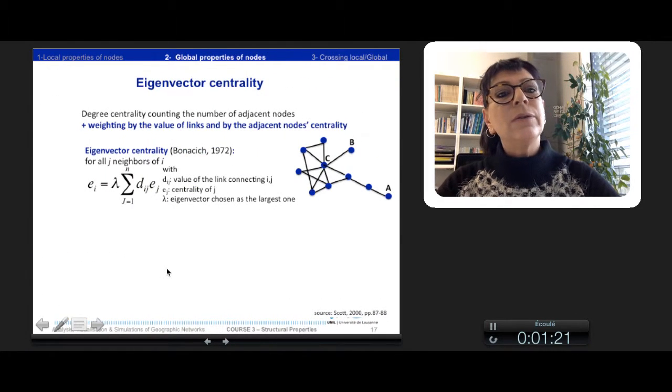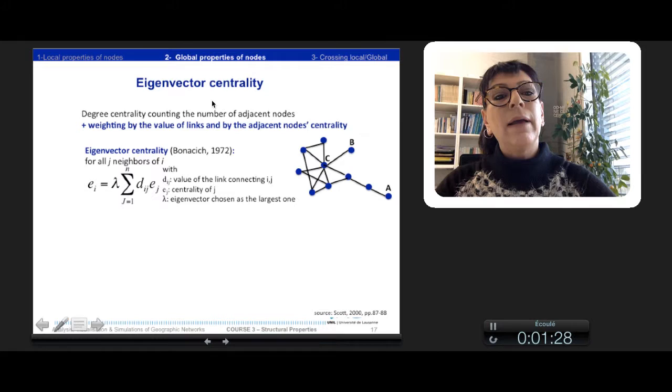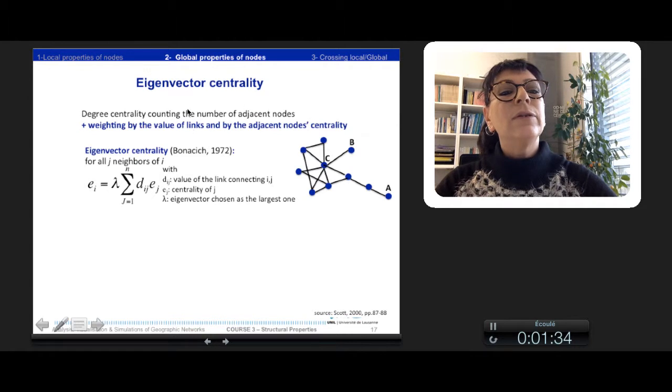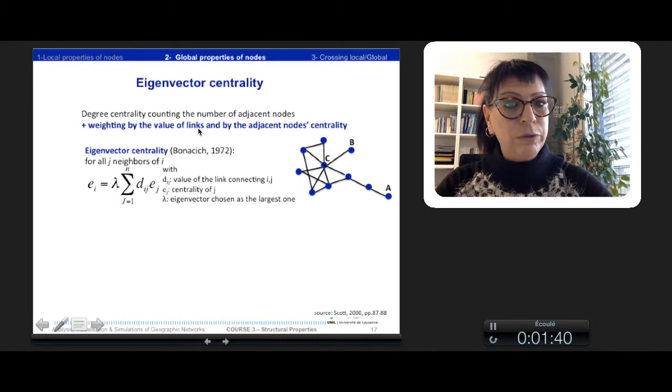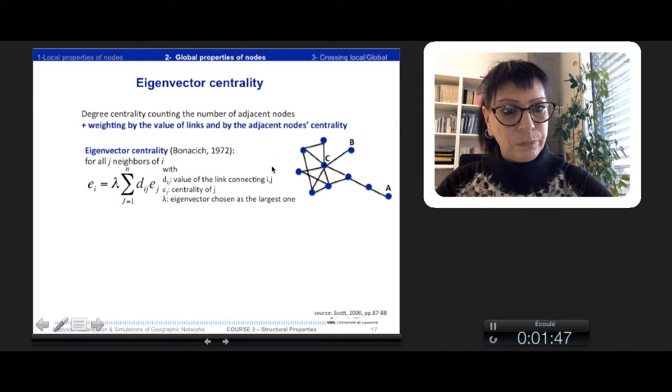And then we can compare the position of a node in a network and in another network. Besides, the eigenvector centrality counts the degree centrality and adds the counting of the number of adjacent nodes, and so it evaluates the weighting of the value of the linkage of the nodes.